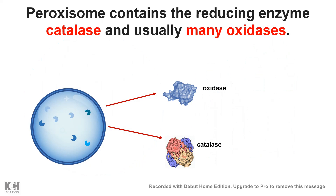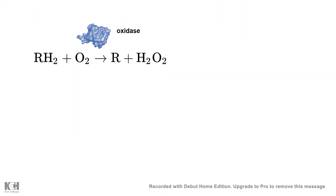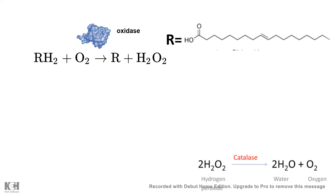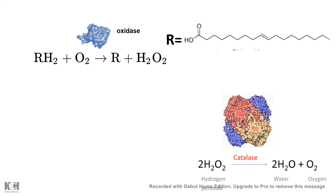This whole plethora of tasks that the peroxisome carries out is done by enzymes inside the peroxisome. The peroxisome has a huge variety of oxidase enzymes and also has catalase. Oxidases can oxidize a group and create hydrogen peroxide, while catalase degrades hydrogen peroxide — because hydrogen peroxide is harmful to the cell as a reactive oxygen species — converting it to water and oxygen.